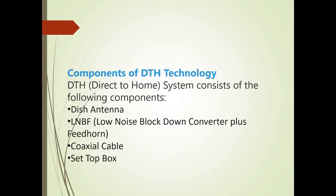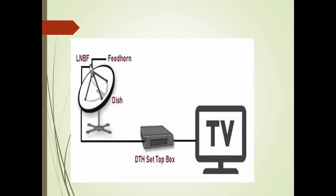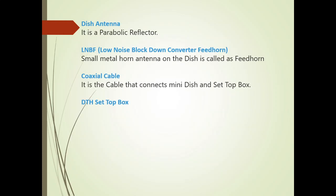The components involved in DTH technology consist of a dish antenna, a low noise block down converter plus feed horn (LNBF), a coaxial cable, and a set-top box — four important components in total. In the diagram we can see the LNBF with feed horn, the dish, the set-top box, and the monitor.